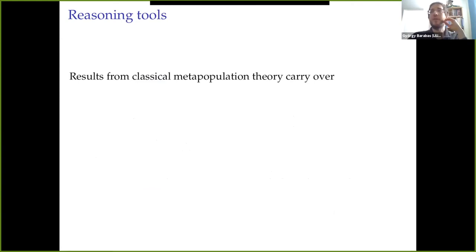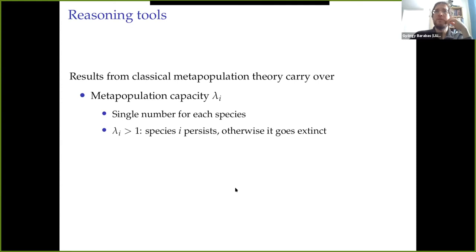This is aided by certain reasoning tools that come really from metapopulation theory. The good thing about building this whole framework on top of classical metapopulation models is that their results carry over. One of those results is that in metapopulation models, there is a quantity called the metapopulation capacity for species. It's a single number, even though the species is on a landscape, called lambda_i. And it is an indicator on whether the species can persist on the landscape. If lambda_i is larger than one, then the species persists, otherwise it goes extinct.